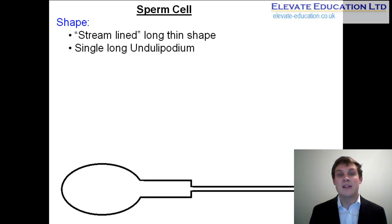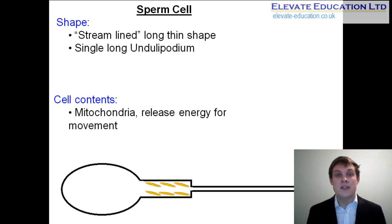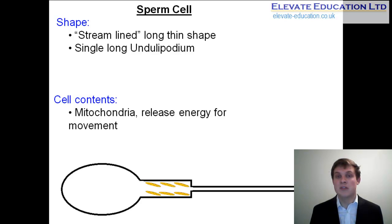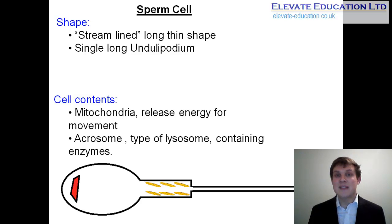Both of these specialized features make the sperm cell ideally suited to swimming through to fertilize the female's egg. Within the sperm cell, the contents are also specialized: it contains a high concentration of mitochondria around the base of the undulipodium, which are used in aerobic respiration to release energy enabling movement. If the sperm contained fewer mitochondria, it would produce less ATP and would not be able to swim as quickly. The sperm cell also contains a large structure called an acrosome — a large membrane-bound vesicle and a type of lysosome — which contains the enzyme the sperm needs to break down the coating around the outside of the female egg.